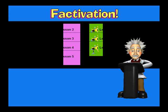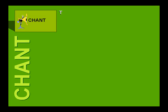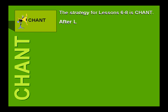Now let's look at the chant group. This group includes lessons six, seven, and eight. The strategy for lessons six through eight is chant. After lessons six through eight, you'll know all of these facts.